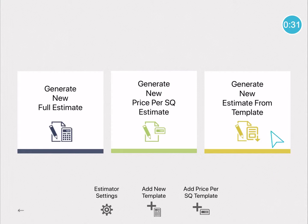Now we have three types of estimates you can create in iRoofing. If you'd like to create a full estimate accounting for all materials and pricing, choose Full Estimate. The second option is for a general contractor who would like to offer a quote based on price per squares, but the estimate itself will still look like you've done a full-fledged estimate. The third option, one which I highly recommend, is to create an estimate from a saved template. You can save as many of these templates as you want and then just pull them as needed with all your information saved.